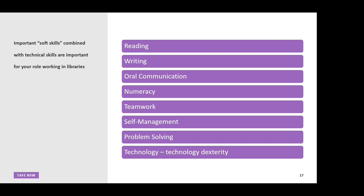These are the important soft skills combined with technical skills that are important for your role in working in libraries: reading, writing, oral communication, and numeracy. This program also has a unit on teamwork, self-management, problem solving, and technology. Technology dexterity means you don't need to know every single computer software program, but you need to understand how a library management system works so that if you know one system, you understand what the cataloging module and circulation module do, and you can learn new systems in a new location.